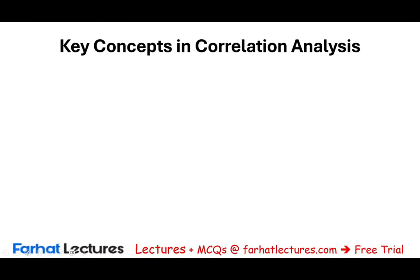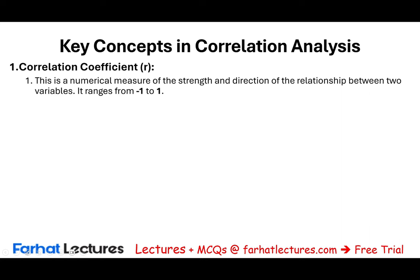Let's familiarize ourselves with key concepts in correlation analysis. The first is the correlation coefficient, or r. This is a numerical measure — basically the result or output representing the strength and direction of the relationship between two variables. R ranges from negative one to one. An r of one indicates a perfect positive linear relationship: going back to our advertisement and sales example, every increase of one dollar in advertisement corresponds to an increase of one dollar in sales.